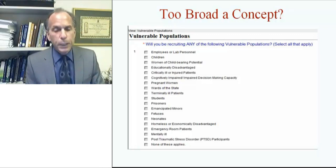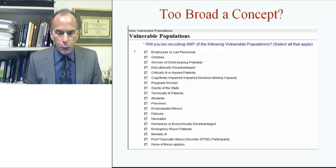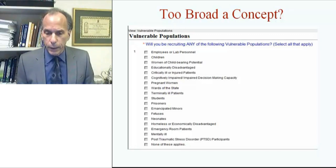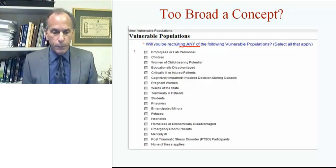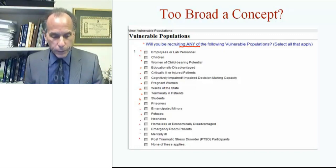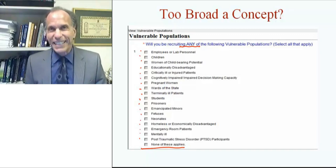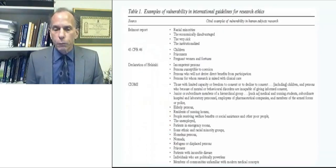Another concept I would like to talk about is the concern that maybe vulnerability in the research context has become too broad of a concept. One reason I say this is that this slide shows a question asked when one submits online a protocol to the IRB at the University of Maryland: it asks will you be recruiting any of the following vulnerable populations? And we see a very inclusive list of many different types of groups. Then it asks if none of these applies — with such a long list, one wonders if one is ever able to check off that last box.